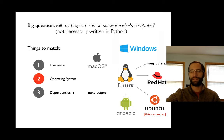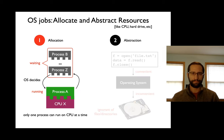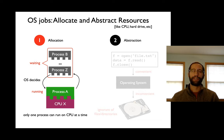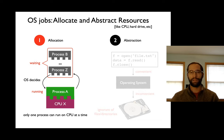Worrying about the operating system is going to be what we do when thinking about reproducibility. The OS — I'm going to abbreviate it OS — worries about what jobs or processes we want to run on our computer. It has two jobs in this regard: how can it allocate resources to these processes, and also abstract those resources? Abstraction is kind of a funny word — I'll talk more about that. Let's talk about allocation first.